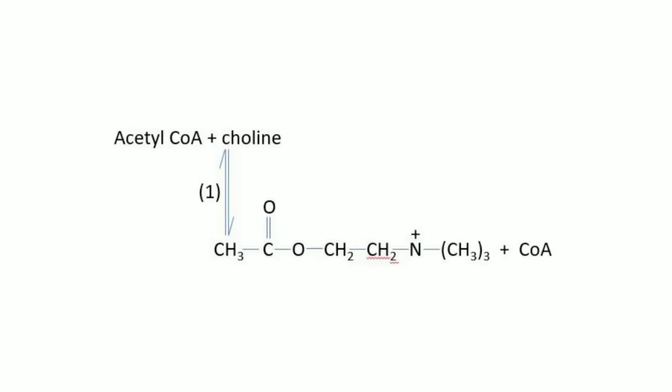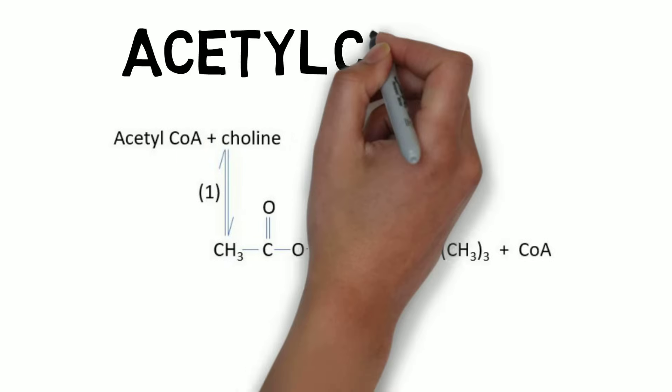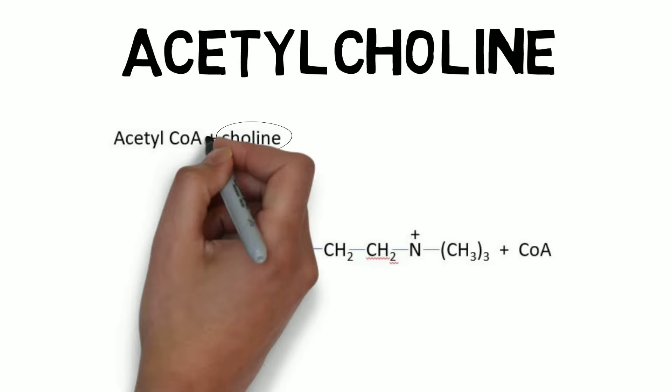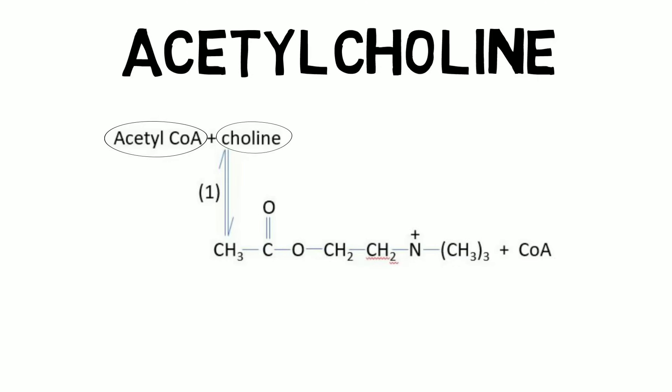Acetylcholine was the first neurotransmitter discovered, and is named for the two substances used to synthesize it: the nutrient choline and the enzyme acetylcoenzyme A.